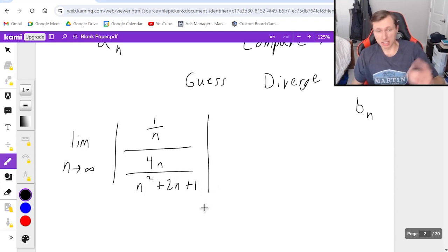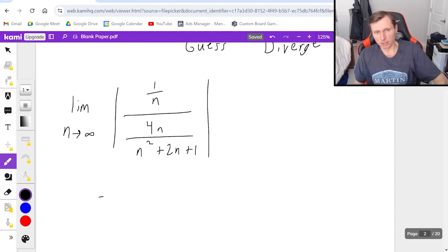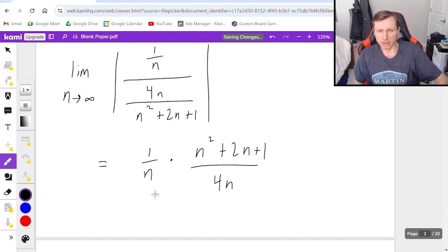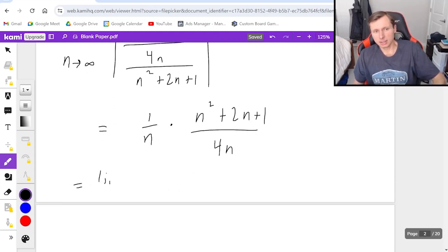And now if I want to solve this, this is a complex fraction, so I have to multiply by the reciprocal. That's going to be 1 over n times n squared plus 2n plus 1 divided by 4n. And the absolute value signs really don't matter that much. So then combining like terms, the numerator is going to be n squared plus 2n plus 1, and the denominator is going to be 4n squared.